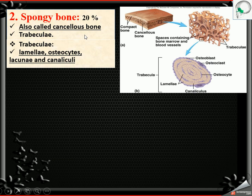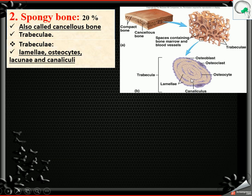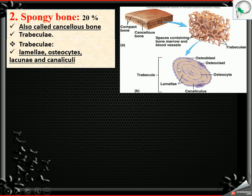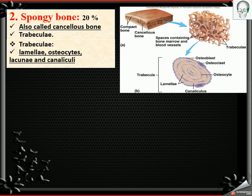In detail about the trabeculae unit: there are also lamellae in ring shape, and the cavity is called lacunae, which is filled by osteocyte. There is also a thread-like structure by which lacunae are connected with each other — similar to osteon or Haversian system, but without the Haversian canal.